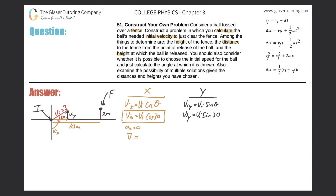The ball travels with the initial velocity in the x direction and has to cover 10 meters. So the average velocity in the x direction equals the displacement in the x direction divided by time. Since the average velocity equals the initial velocity, we have: initial velocity times cosine of 30 equals 10 divided by t. We solve this for t — you'll see why in a minute. That's all we know about the x-axis.